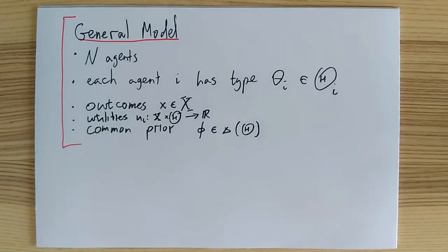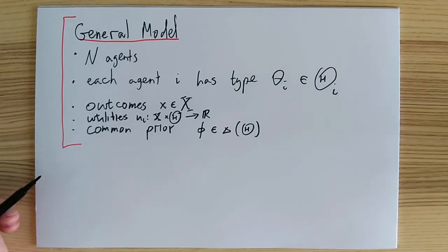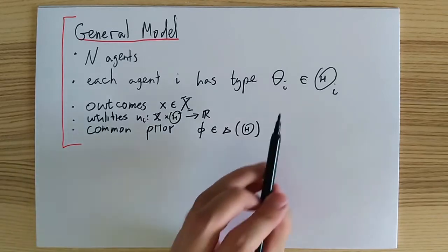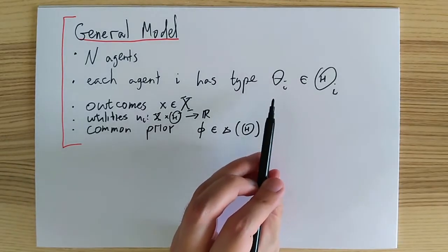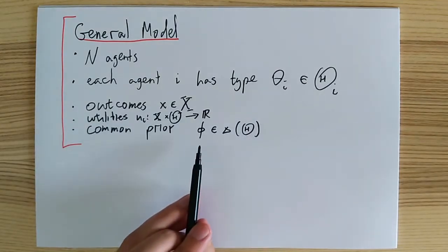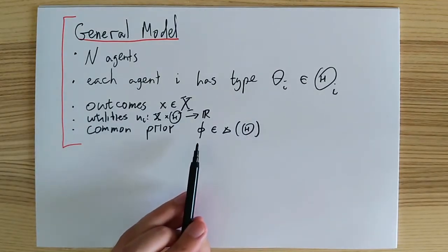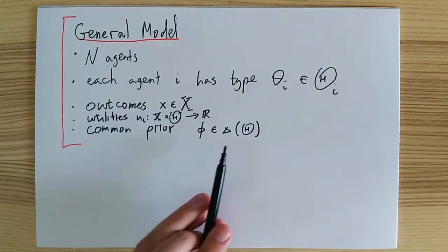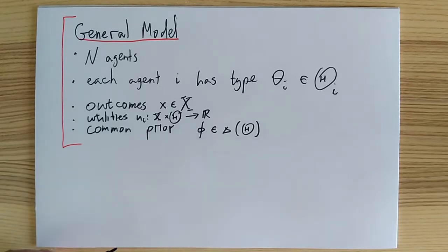With Bayesian implementation, we take an interim perspective rather than an ex-post perspective as in the case of dominant strategy implementation, meaning that we now have to keep track of the beliefs that every type of every player has about other players' types. To that end, we assume that all players start with a common prior belief over type profiles, and then employ Bayes' rule to update this belief once they observe their own type.